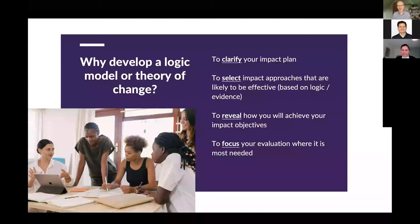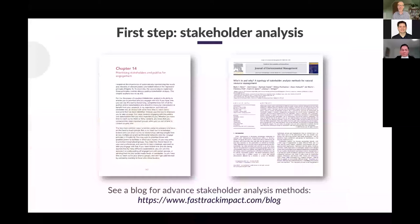We'll have a sense of how ultimately we are going to get to those objectives, so we can prioritize the activities most likely to work for a given stakeholder group and actually take us to impact. As Eric will explain, we'll be able to focus our evaluation. The logic model I'm going to give you has two columns focused on evaluation, and you can flip theory of change on its head and use it to do an evaluation in and of itself — it can create evaluation evidence.